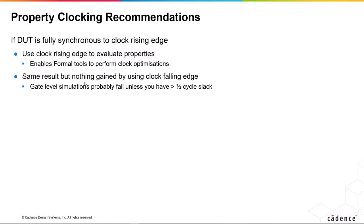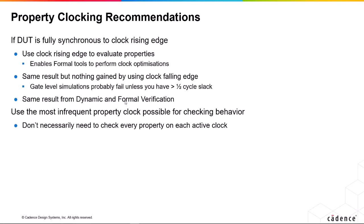For gate level simulations, if you have greater than half a cycle of slack, then your assertions are going to fail because of the signal delays. Always use the same edge of the clock for properties as your design uses.